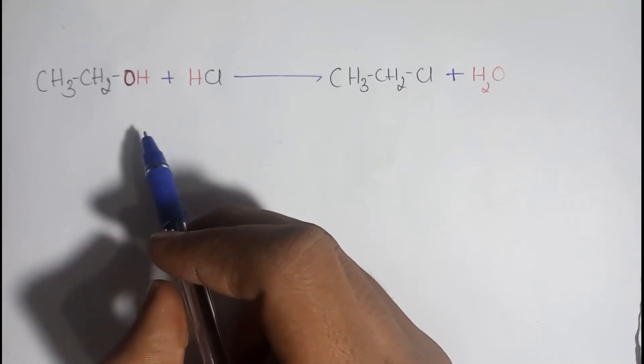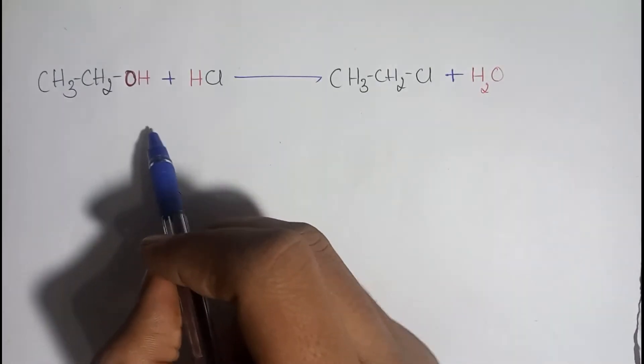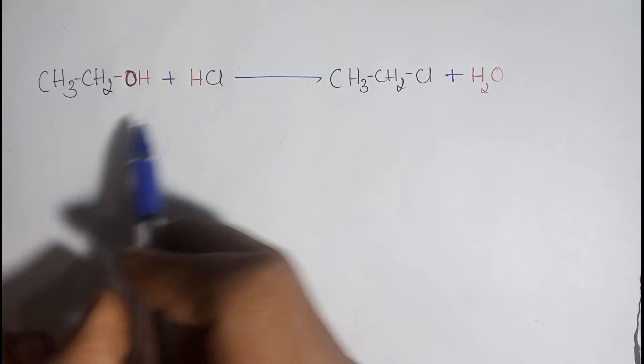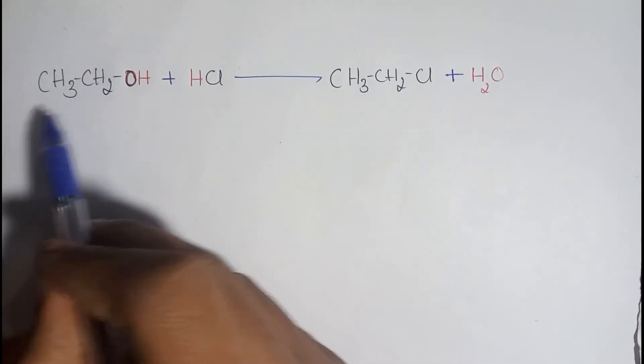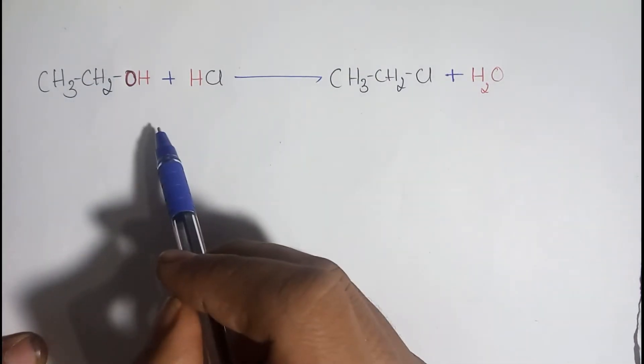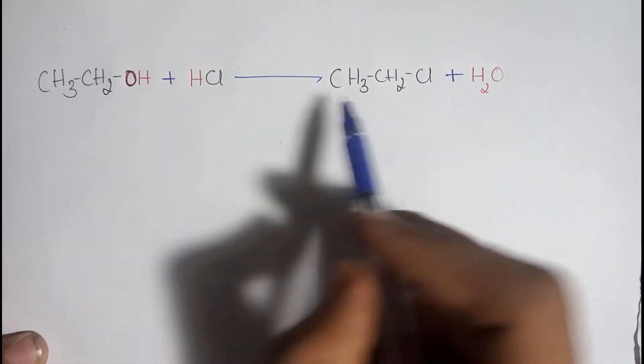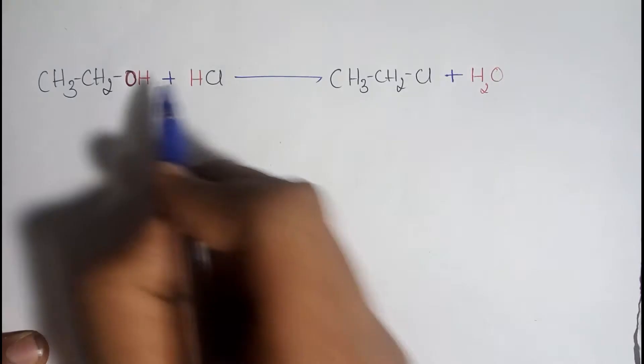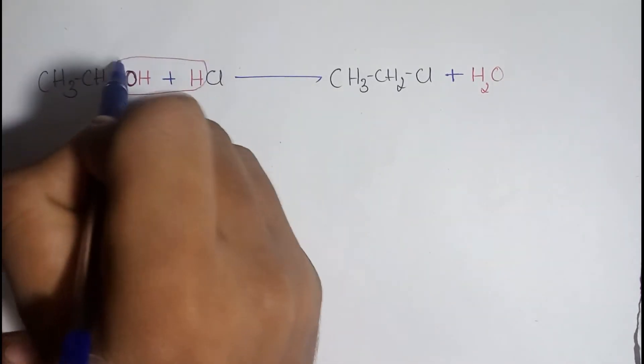Okay, let us consider an example where we are going to prepare ethyl chloride. Let us react ethyl alcohol and hydrochloric acid. When they both react, we get ethyl chloride and water. Here, water is eliminated as a byproduct.